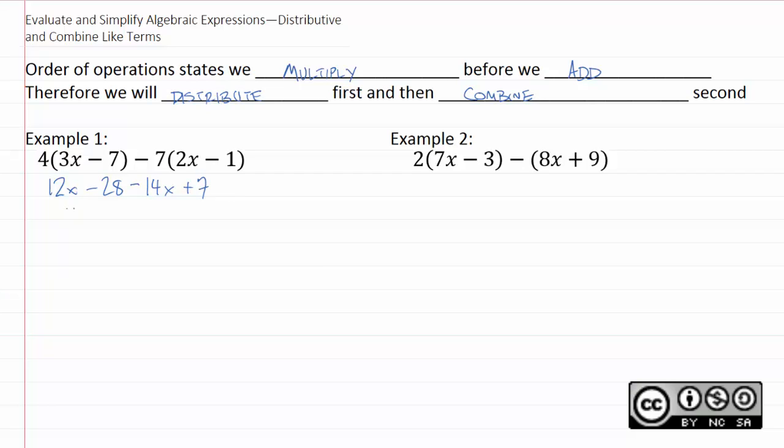Now we combine our x terms. We combine like terms. 12x minus 14x is negative 2x. Negative 28 plus 7 is negative 21.